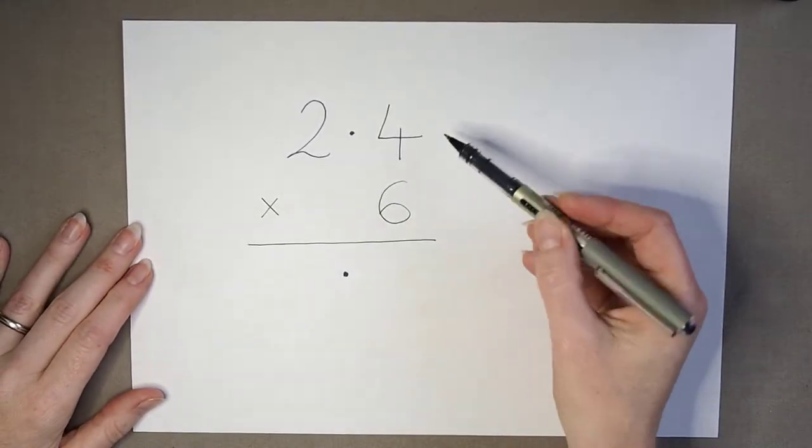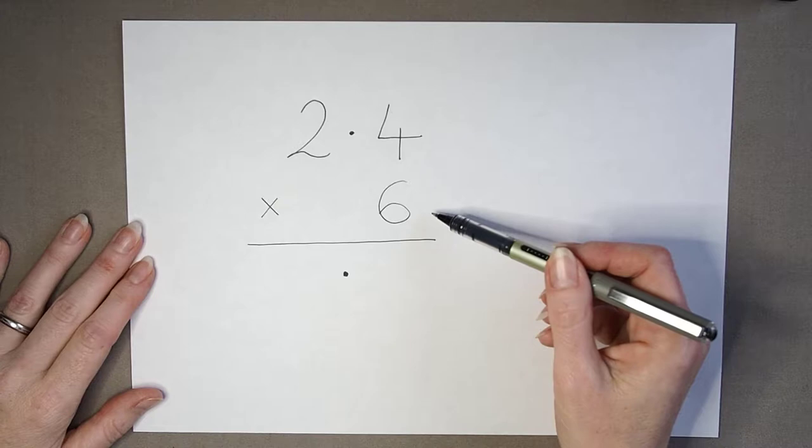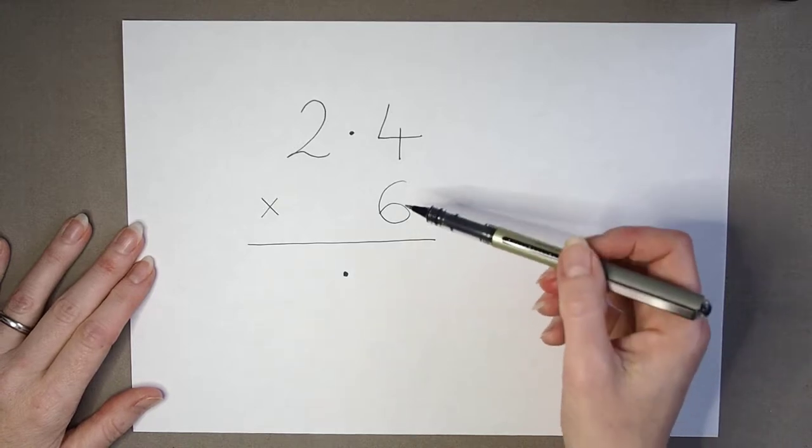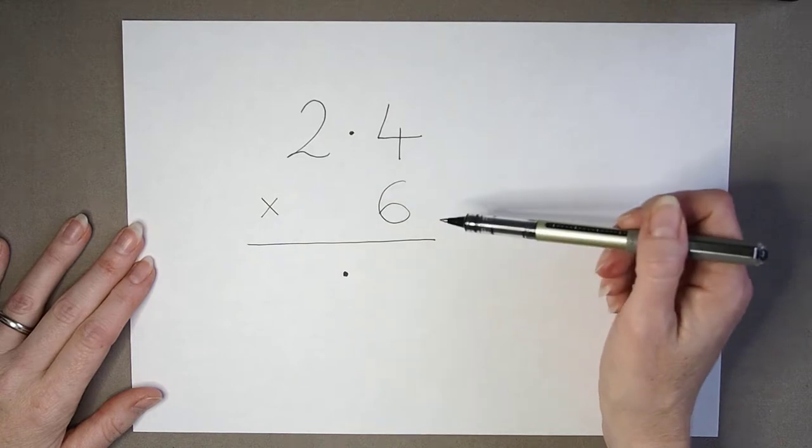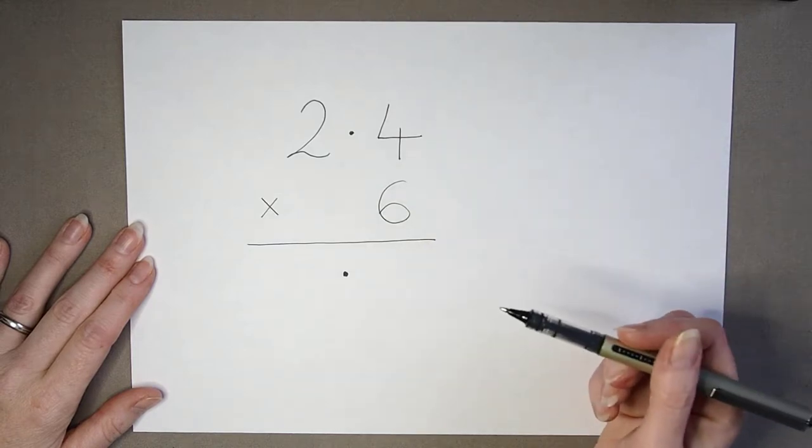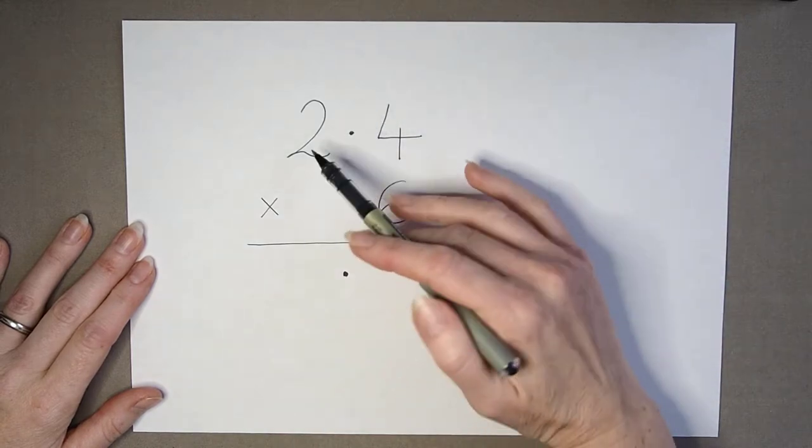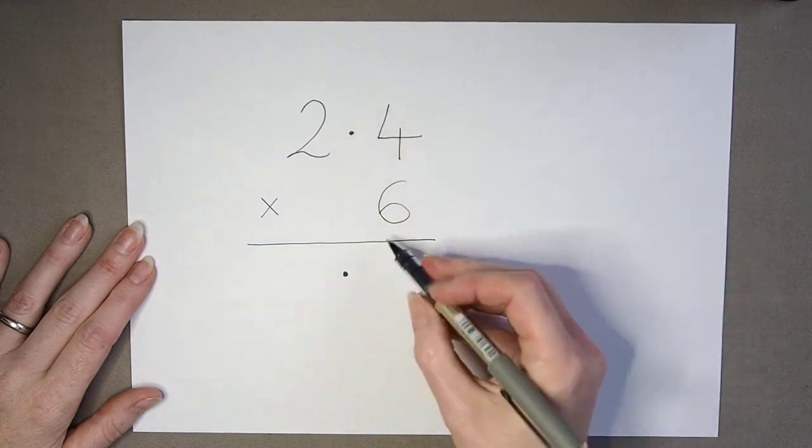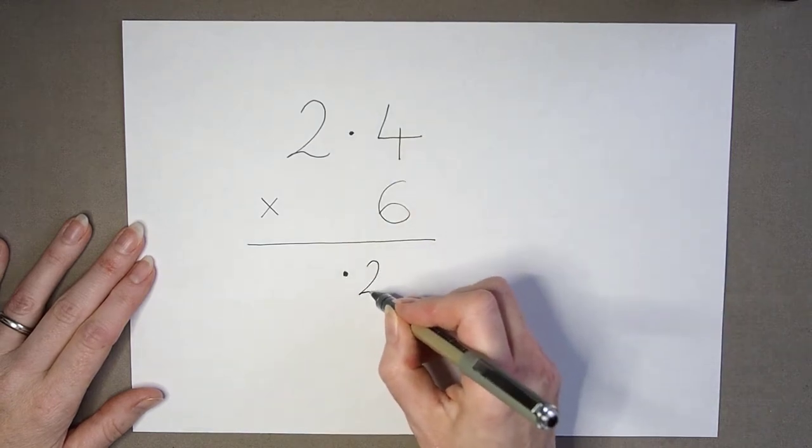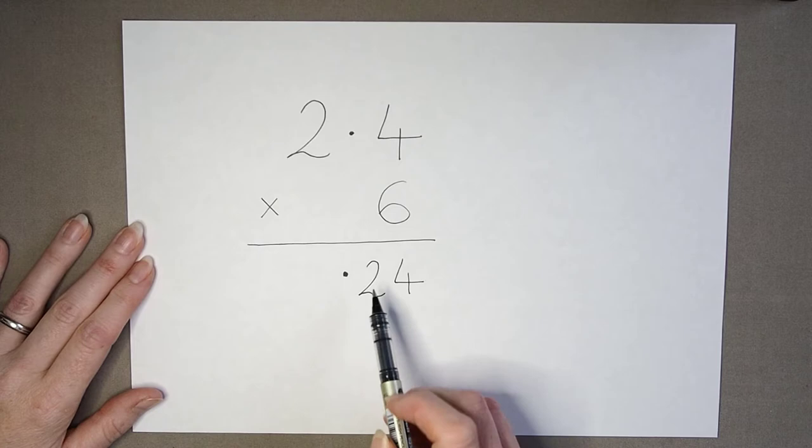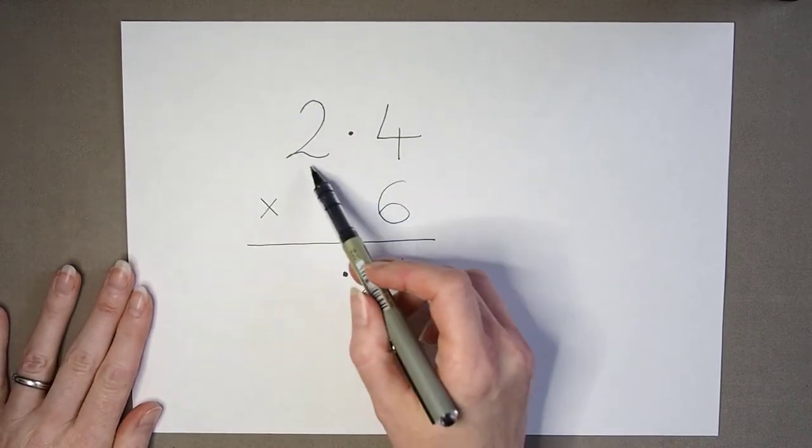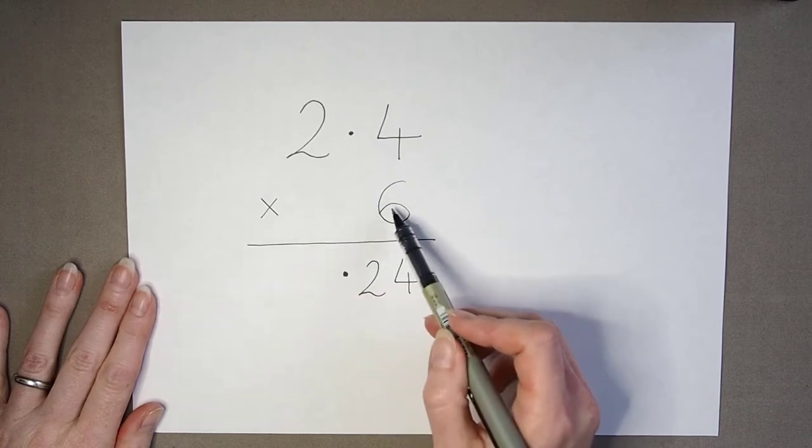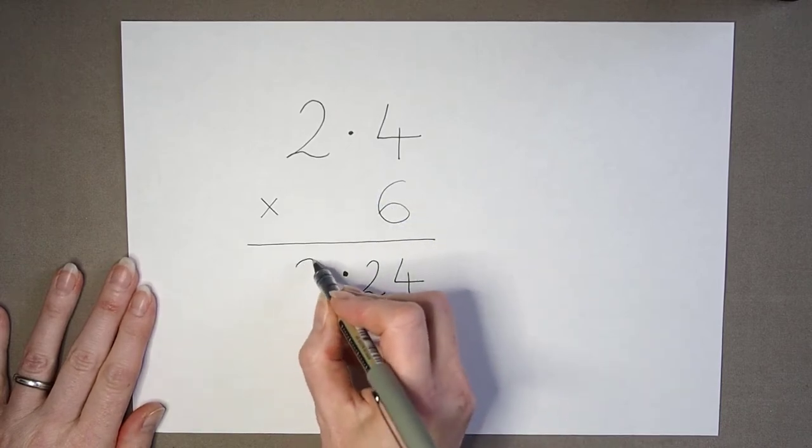If pupils set out the calculation correctly, they may then multiply 4 by 6 and get 24, viewing this as a separate part of the calculation and writing 24 on one side of a decimal point. Then they go on to do 2 multiplied by 6 is 12.